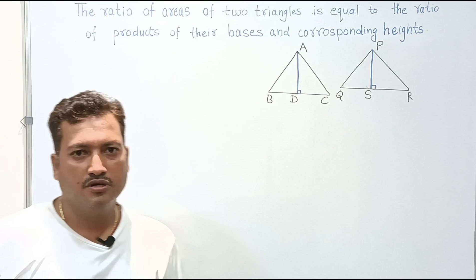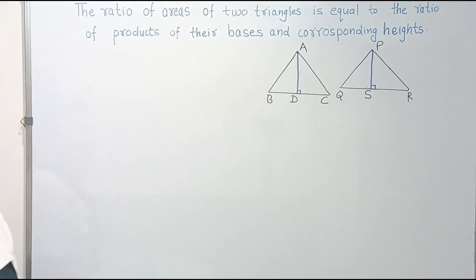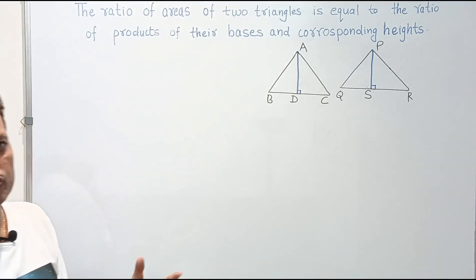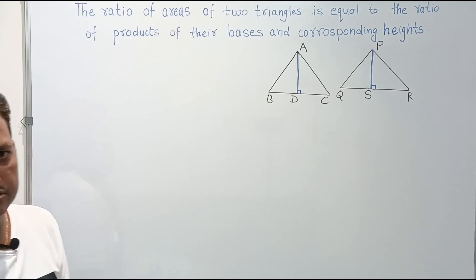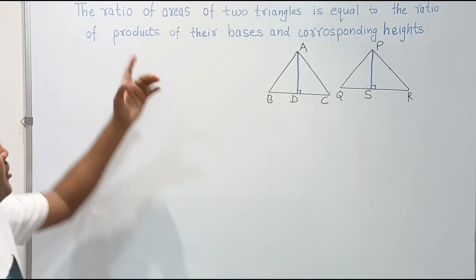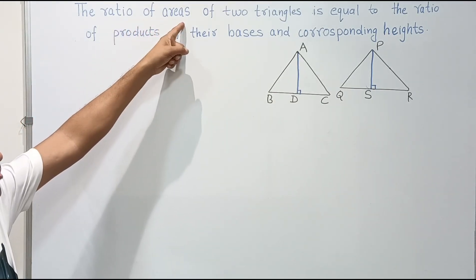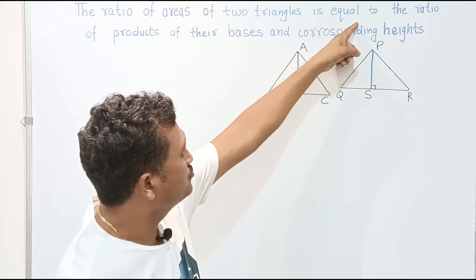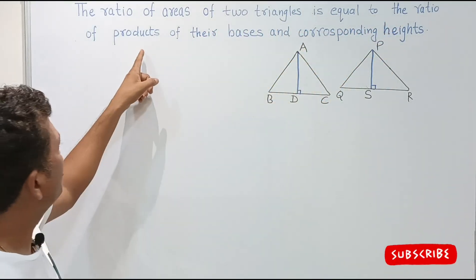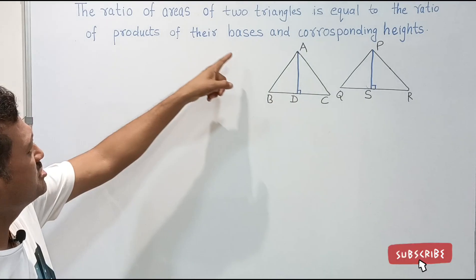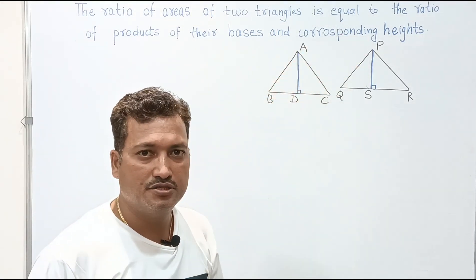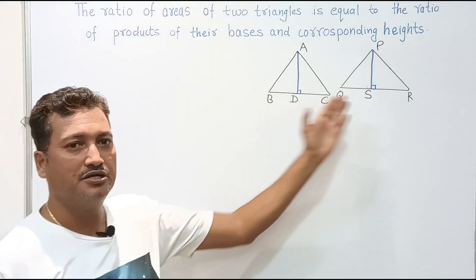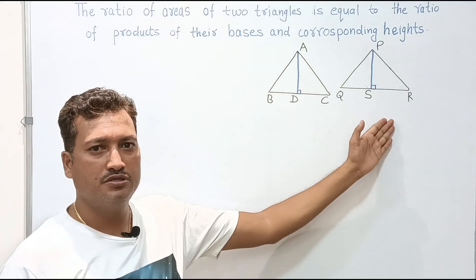Hello friends, today we are going to learn an important property on areas of two triangles. The first property is: the ratio of areas of two triangles is equal to the ratio of the product of their bases and corresponding heights. Now we'll try to understand this property.